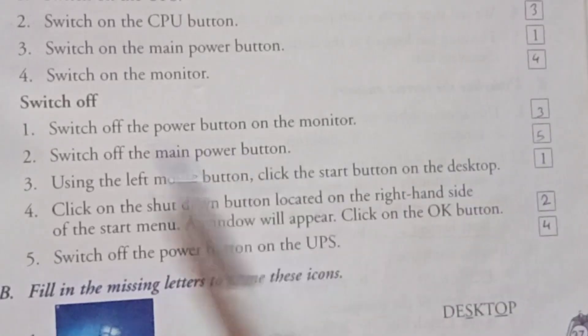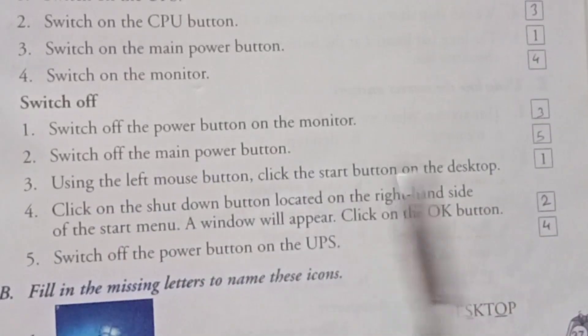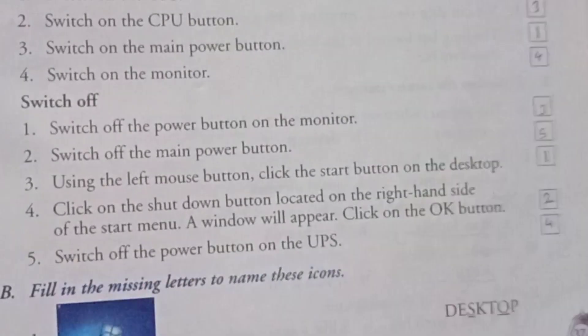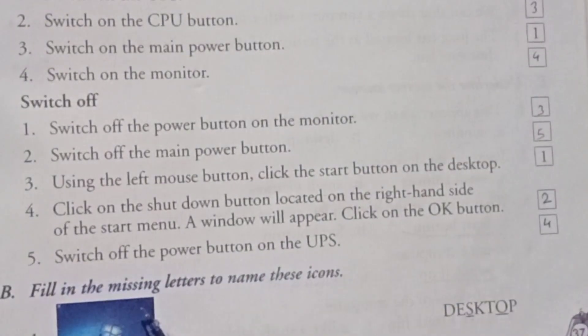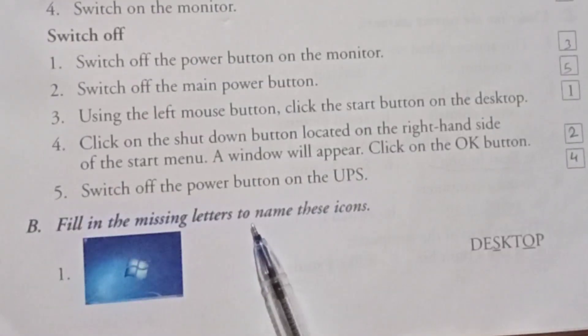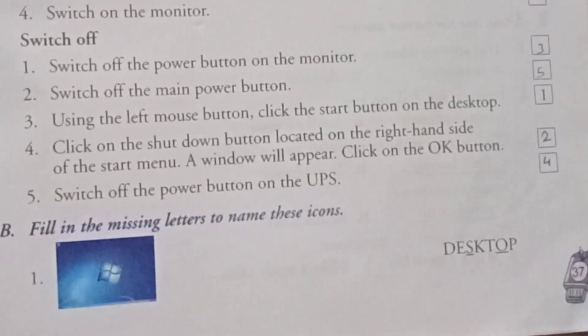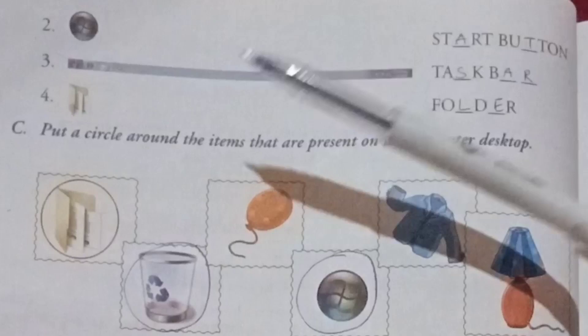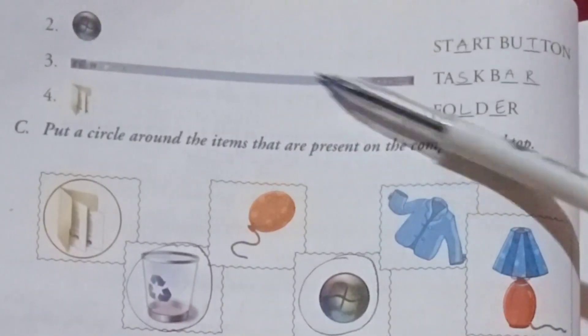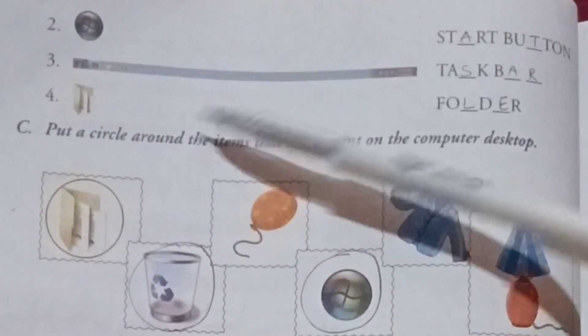Fourth, switch off the power button of UPS. Fifth, switch off the main power button. Fill in the missing letters to name these icons: desktop, start button, taskbar, folder.